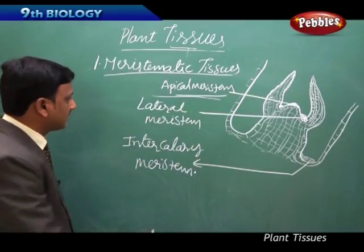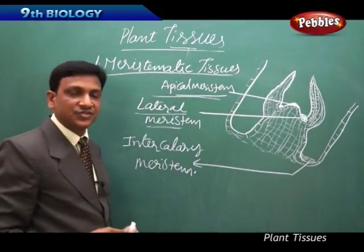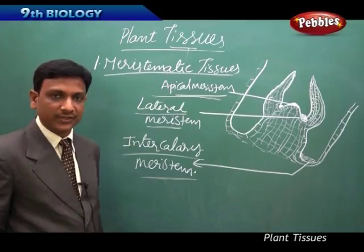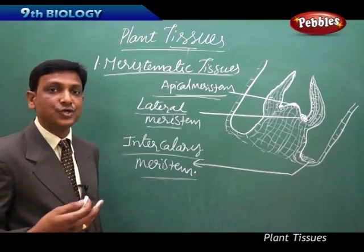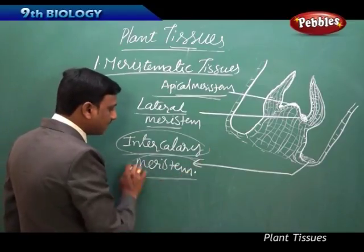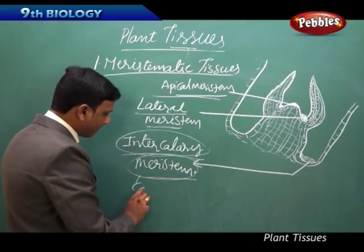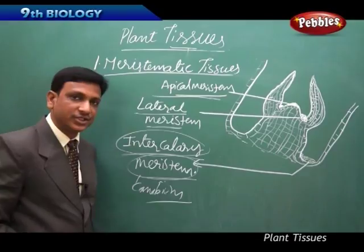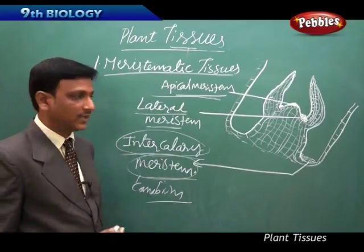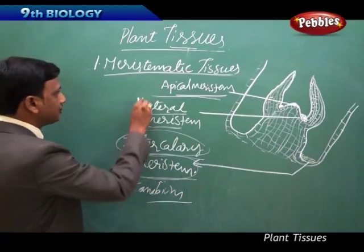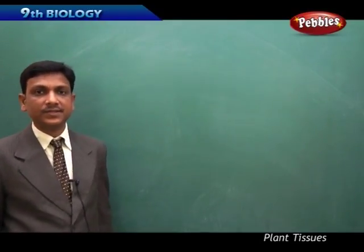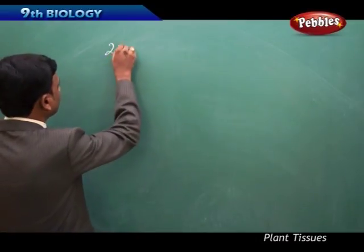The apical meristem increases the plant's height, while lateral meristem increases its width. The intercalary meristem helps the plant produce new tissues — forming a stalk for a flower, fruit, or new branch. Where a new branch, flower, or stalk arises on the stem, this intercalary meristem is active. It is also called cambium and plays an important role in the development of cells at those growth points.